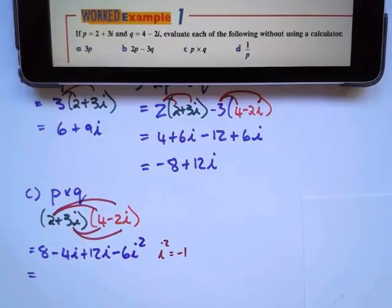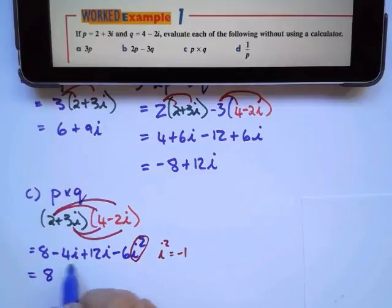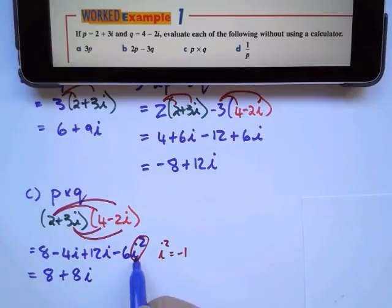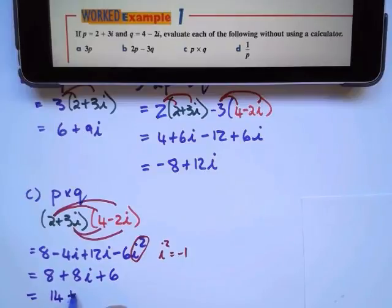So I'm going to replace this with negative 1, which gives us 8. Minus 4i plus 12i is positive 8i. i squared is negative 1, negative 6 times negative 1 is positive 6. Now I can say 8 plus 6 is 14 plus 8i, and that's my final answer.